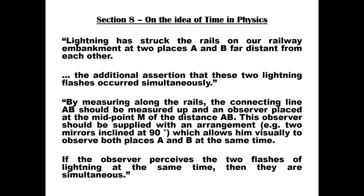This observer should be supplied with an arrangement — for example, two mirrors inclined at 90 degrees — which allows him to visually observe both places, A and B, at the same time. He concludes that if the observer perceives the two flashes of lightning at the same time, then they are simultaneous.